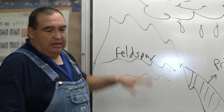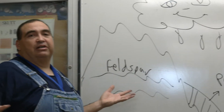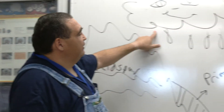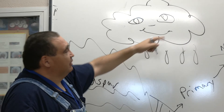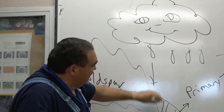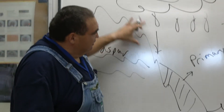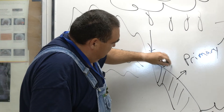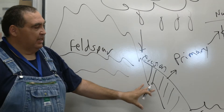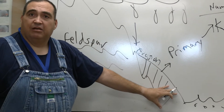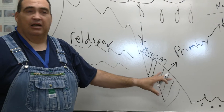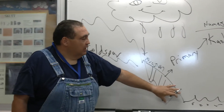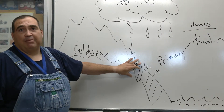But how do we get from here — the granite — to here, the clay that you work with? Over millions of years, you have rain — there's my happy little cloud — and you have the mountain being worn down through erosion. What happens is you get this deposit, which is primary clay. This is the stone broken down, and you get a good deposit of primary clay.